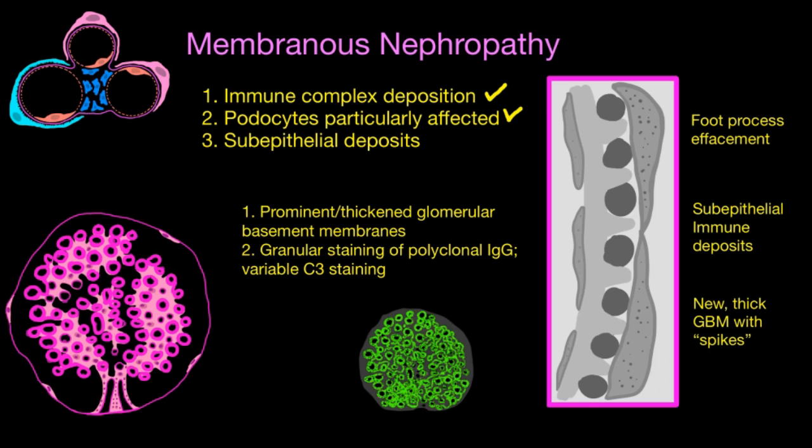If we did a kidney biopsy on our patient with nephrotic syndrome and membranous nephropathy, this is what you would see. Under PAS stain of the section, you would see prominent and thickened glomerular basement membranes. Compare this image to a normal glomerulus and you will notice that these membranes are much, much thicker — there's a thick pink layer that you would otherwise not see, which tells you that there's something extra there.